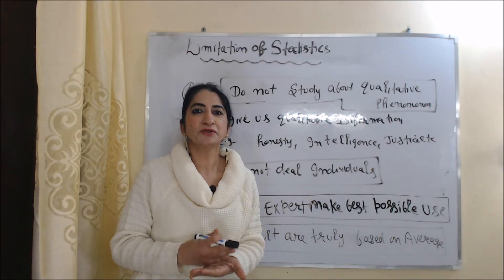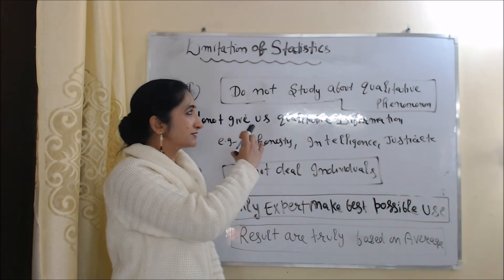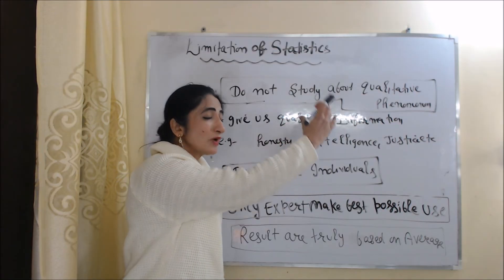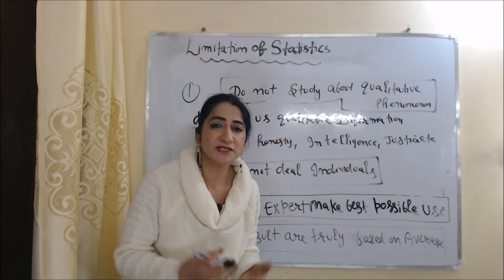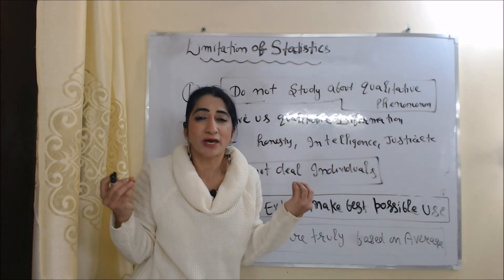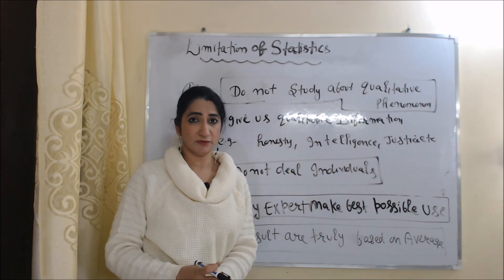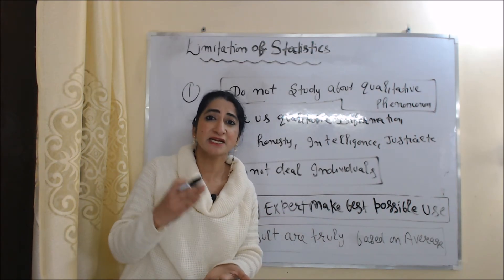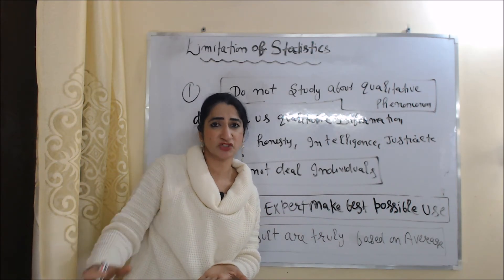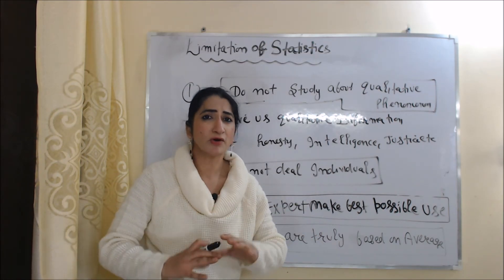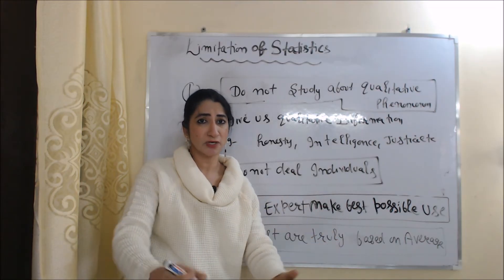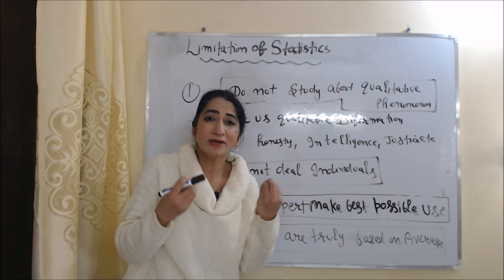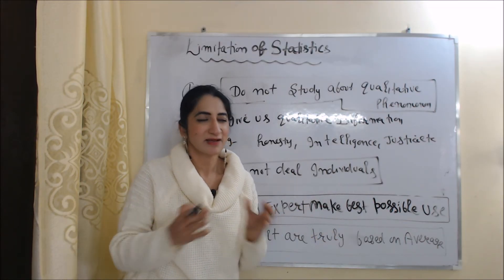Now we are going to talk about the limitations of statistics. The first limitation is that statistics do not study qualitative phenomena — statistics do not give us qualitative information. For example, statistics do not give information about honesty, intelligence or justice. Statistics can tell us marks of students, but they do not tell us how intelligent or honest students are.